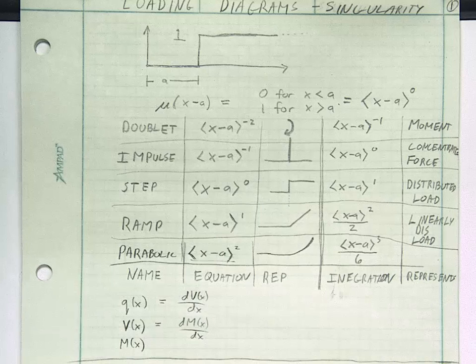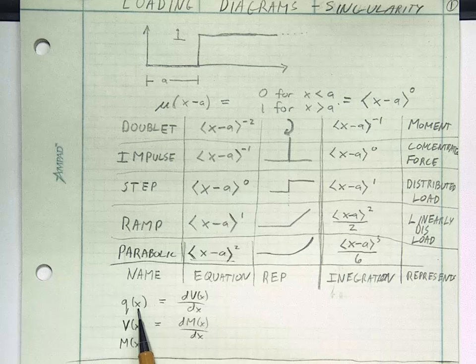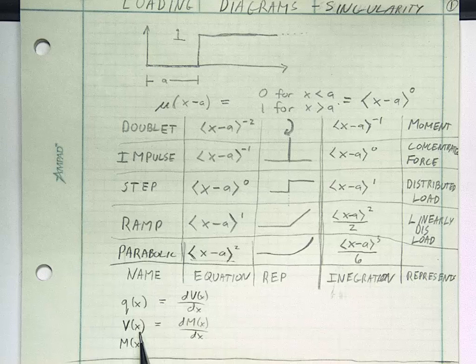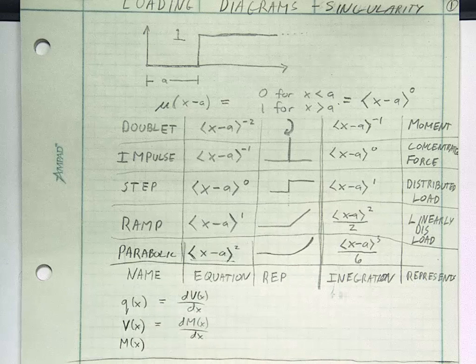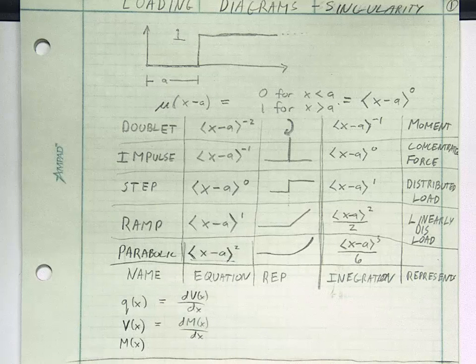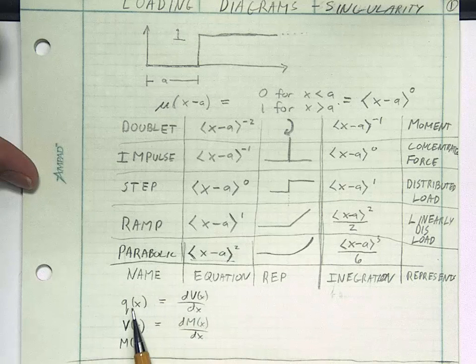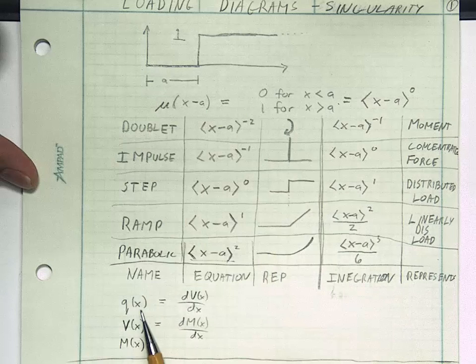It turns out that there is a relationship between these functions. And the relationship is q of x is equal to dv of x dx, and v of x is equal to dm of x dx. In other words, if I have the loading function and I integrate, I will arrive at the shear function. If I have the shear function and integrate again, I'll arrive at the moment function. This means if I were to express my free body diagram as a loading diagram, without doing analysis step by step along the way, I can go directly to shear and moment diagrams.